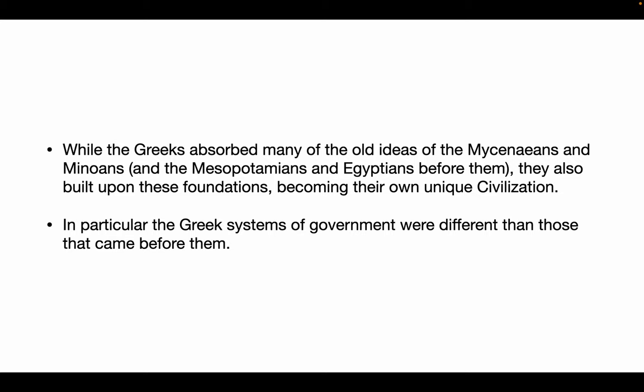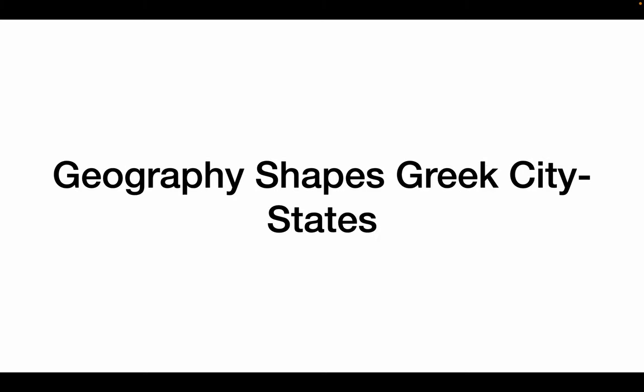The Greeks, if you recall, were big fans of the Mycenaeans, and the Mycenaeans and the Minoans and the Mesopotamians and the Egyptians, and sort of borrowed from all of them. They also built upon these foundations and created something that was uniquely their own. In particular, the forms of government they had were unique for them. So let's first look at Greek geography.